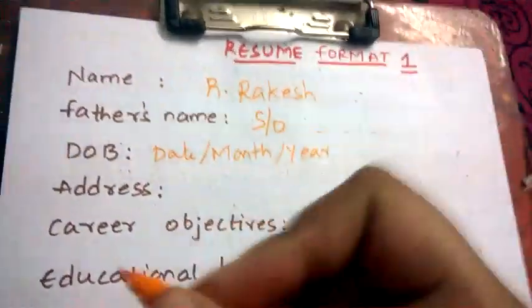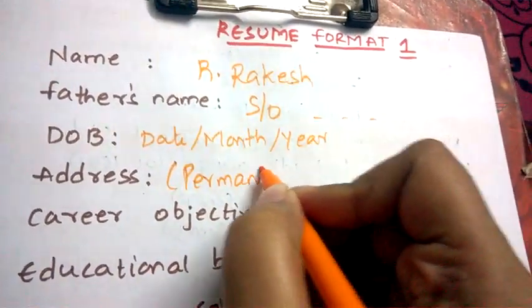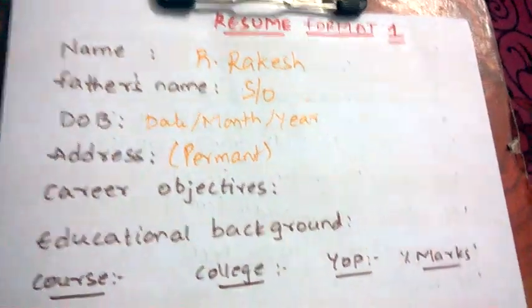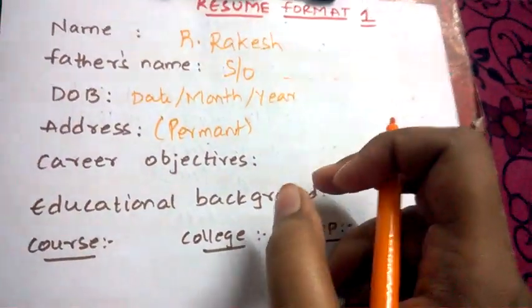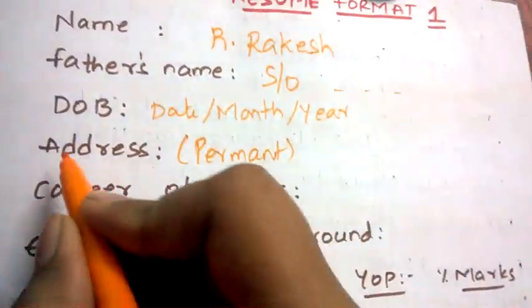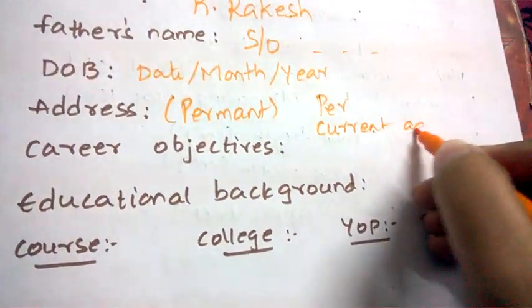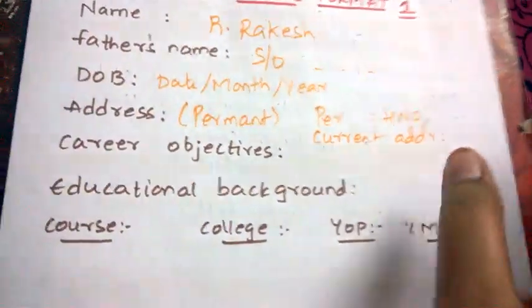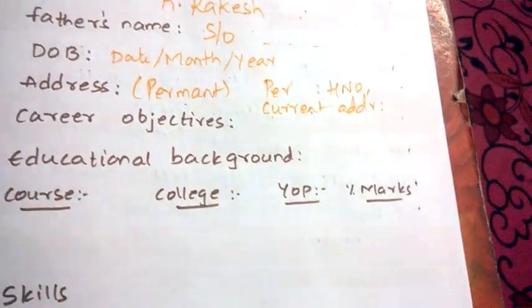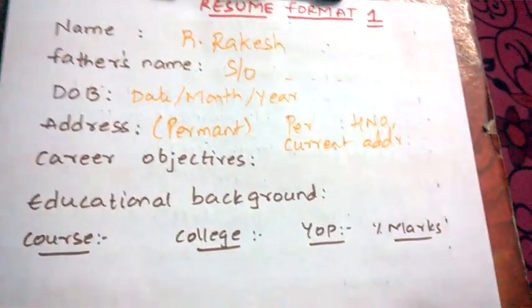Next, mention your address. It's better to mention your permanent address. If you are currently not living at your permanent address, first mention your permanent address and under that mention your current address. Include house number, colony, and everything in detail, because the company may use this address for postal communication.